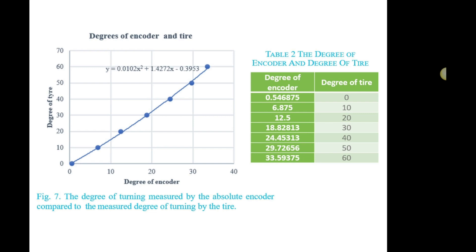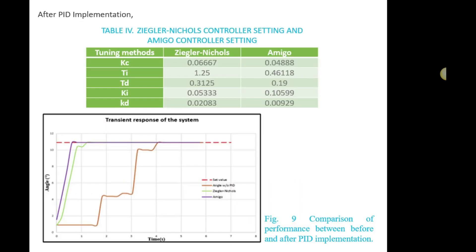To reduce errors such as overshoot, the PID controller is introduced with two tuning methods: Ziegler-Nichols and Amigo. According to this table, you can see the parameters obtained using each tuning method. We put these parameters into the PID controller equation and generate the response.